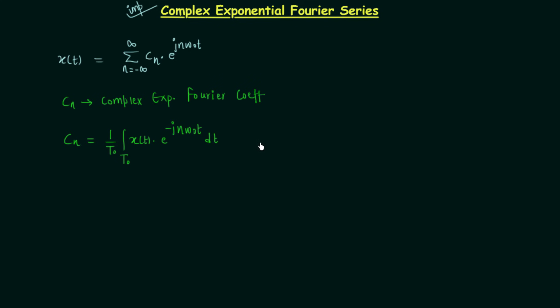The first step is to calculate the Fourier coefficient cn. Once you have the Fourier coefficient cn, you can substitute its value into the expansion and you will have the Fourier series expansion for the periodic signal x(t).